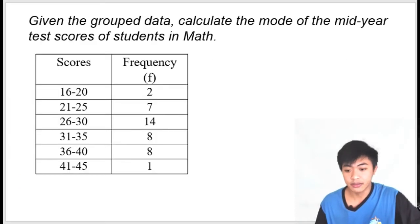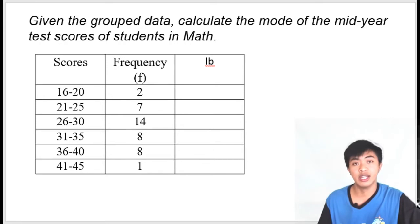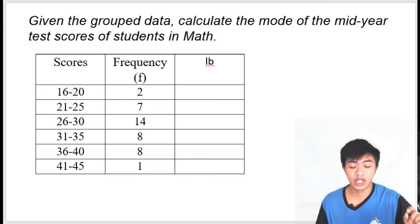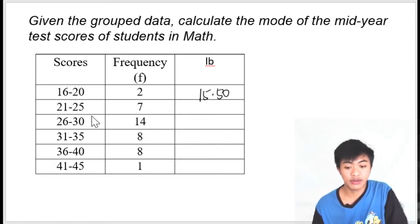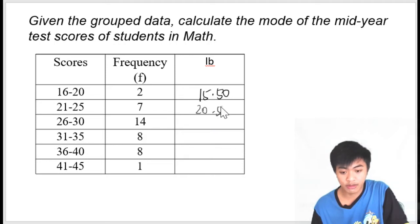Let's have an example. Given the grouped data, calculate the mode of the mid-year test scores of students in mathematics. The first step is to add one column for the lower boundary. Lower boundary is obtained by subtracting 0.50 from the lower limit of the class interval. So the lower limit here in this class interval is 16. To get the lower boundary we subtract 0.50 from 16, giving us 15.50. The lower boundary of the next interval is 20.50, and so on. We complete this column.